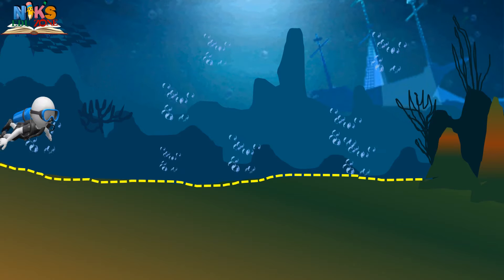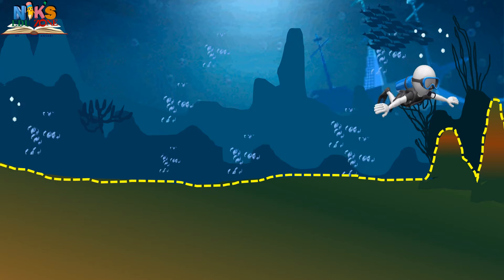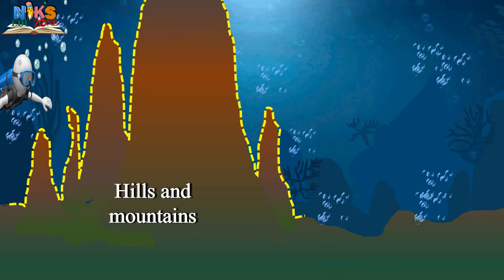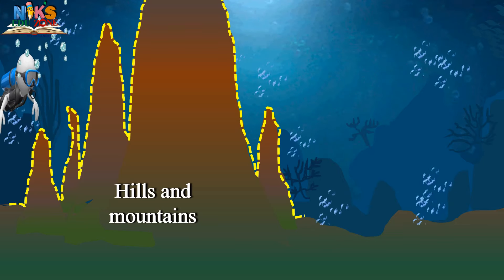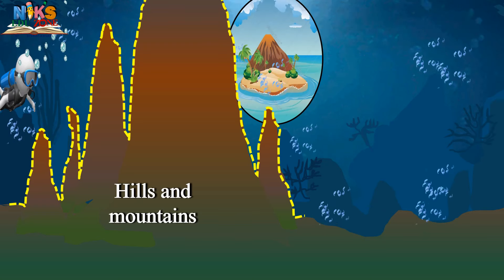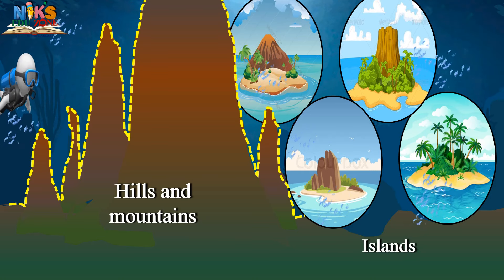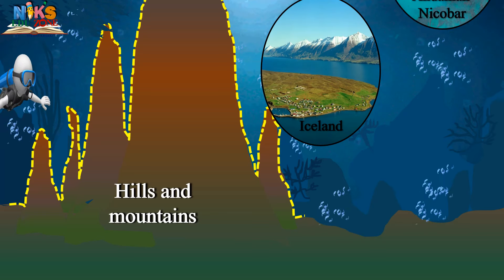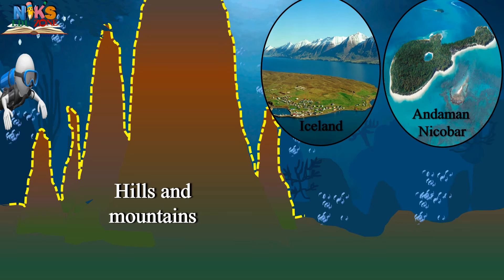Look here — hills and mountains! These hills found on the ocean bed are called submerged hills and mountains. They are hundreds of kilometers wide and thousands of kilometers long. The peaks of some submerged hills rise above sea level and are visible to us as marine islands — for example, Iceland in the Atlantic Ocean and the Andaman Nicobar Islands in the Bay of Bengal.